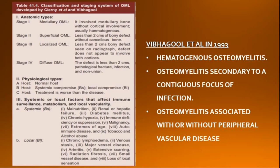Ciani et al. and Vibhagoul developed a classification and staging system based on anatomic location of the infectious process, the physiologic status of the host, systemic or local factors affecting the immune system, metabolism and local vascularity. Classification based on pathogenesis of altered vascular perfusion was given by Vibhagoul in 1993. There are three types: hematogenous osteomyelitis, osteomyelitis secondary to a contiguous focus of infection, and osteomyelitis associated with or without peripheral vascular disease.